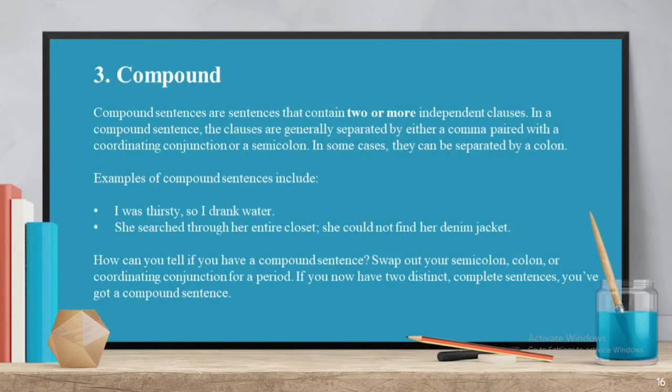Third, compound sentences. Compound sentences are sentences that contain two or more independent clauses. In a compound sentence, clauses are generally separated by either a comma paired with a coordinating conjunction or a semicolon. In some cases, they can be separated by a colon.